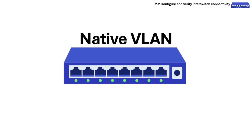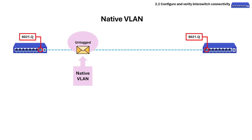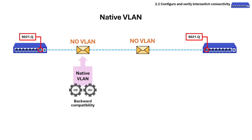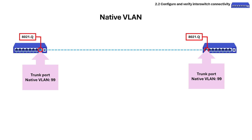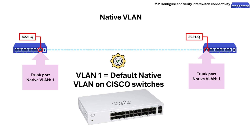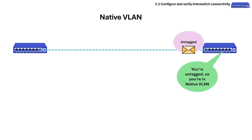The last topic in this section is native VLAN. Native VLAN is the specific VLAN that handles untagged traffic on a trunk link between switches using 802.1Q encapsulation. Native VLAN was created for backward compatibility with older devices that don't support VLANs. Key points to remember: every trunk port must have a native VLAN. By default, VLAN 1 is the native VLAN on Cisco switches. If a switch receives untagged Ethernet frames on a trunk port, it assumes that frame belongs to the native VLAN.